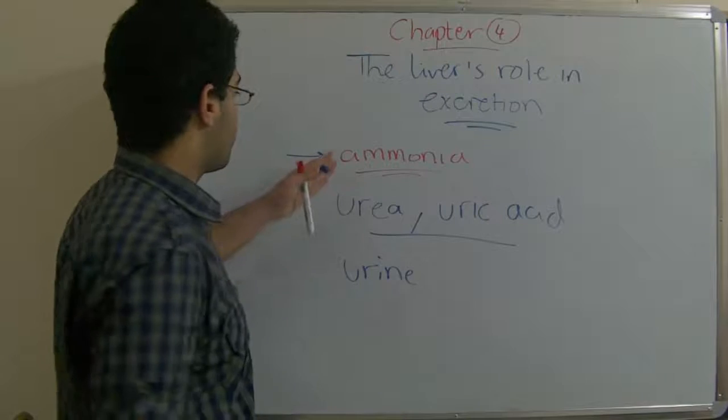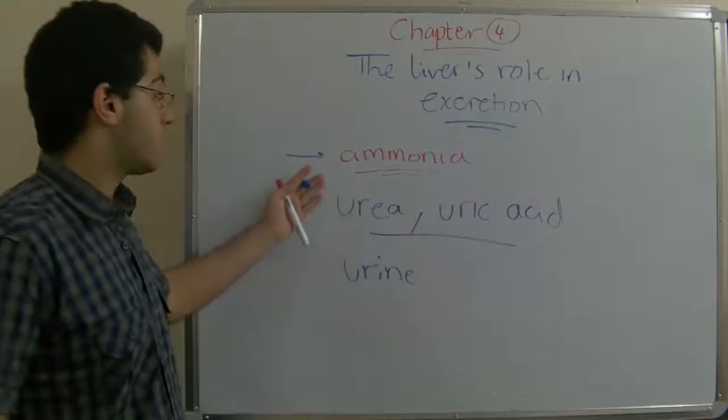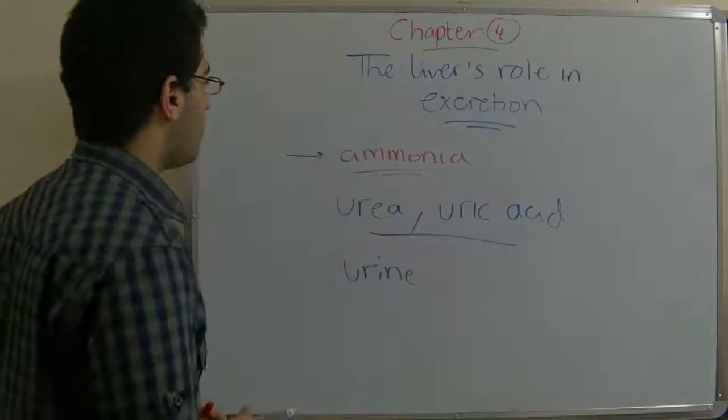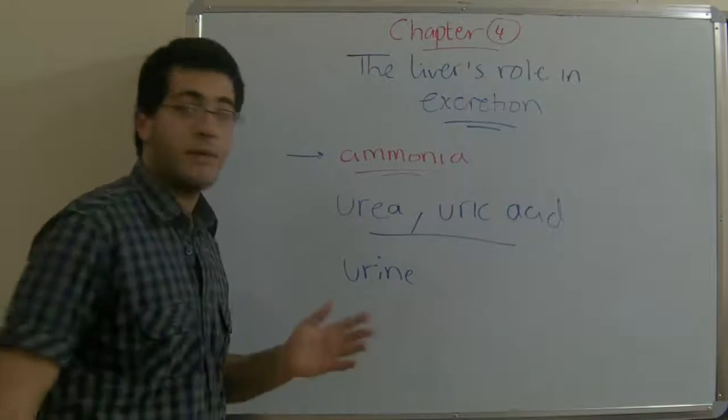This excess group, which is called ammonia, is a nitrogenous group. And so, this is the role of the liver in the excretion carrying the deamination process.